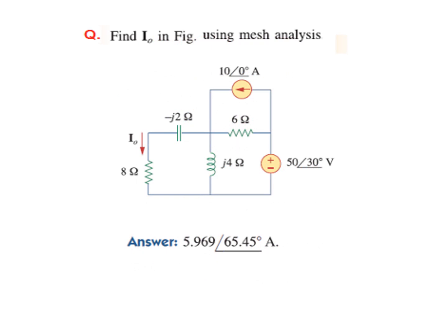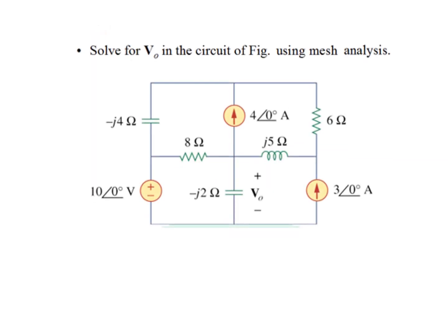Another problem is provided as a home exercise. The three loops are identified, and the third loop has a current source. Since we generally take clockwise direction, I3 equals minus 10 amperes. Solving the two remaining equations gives the answer for I_naught.